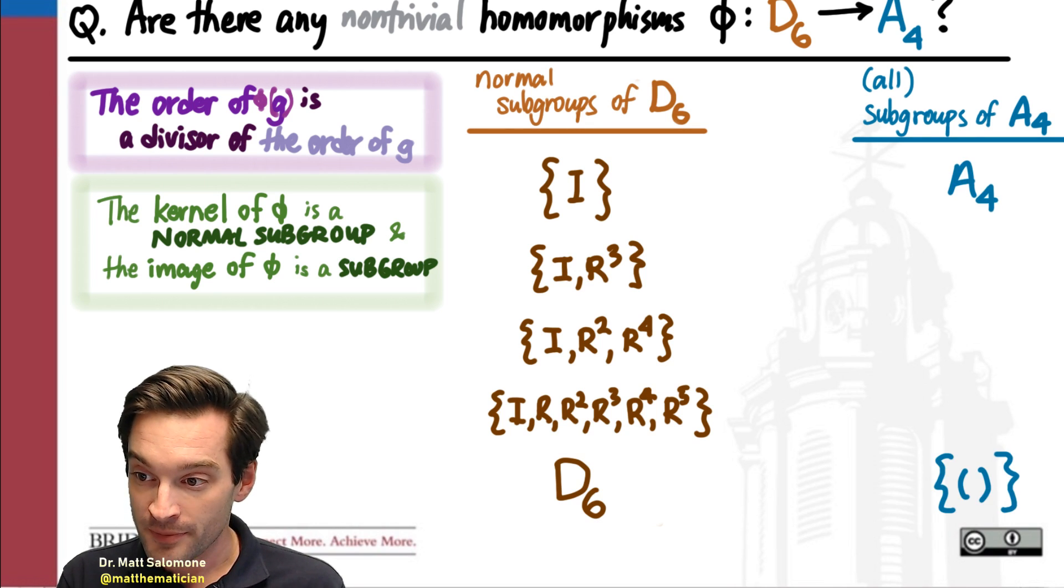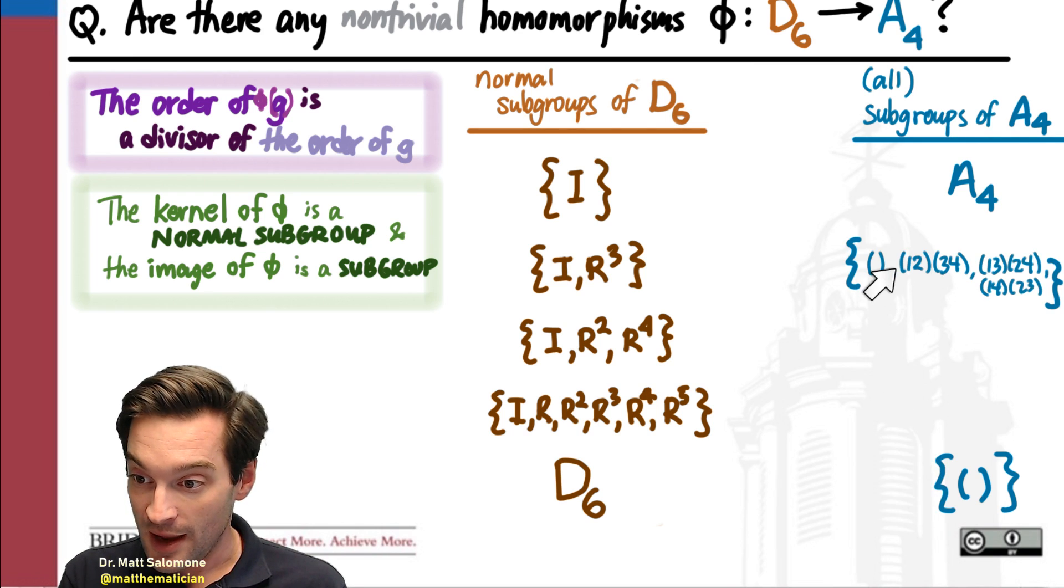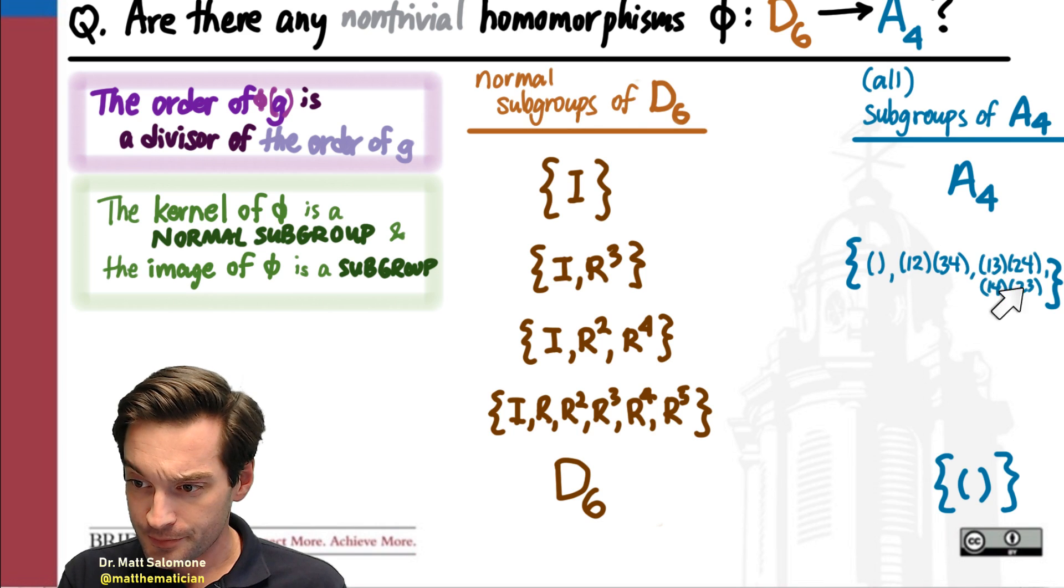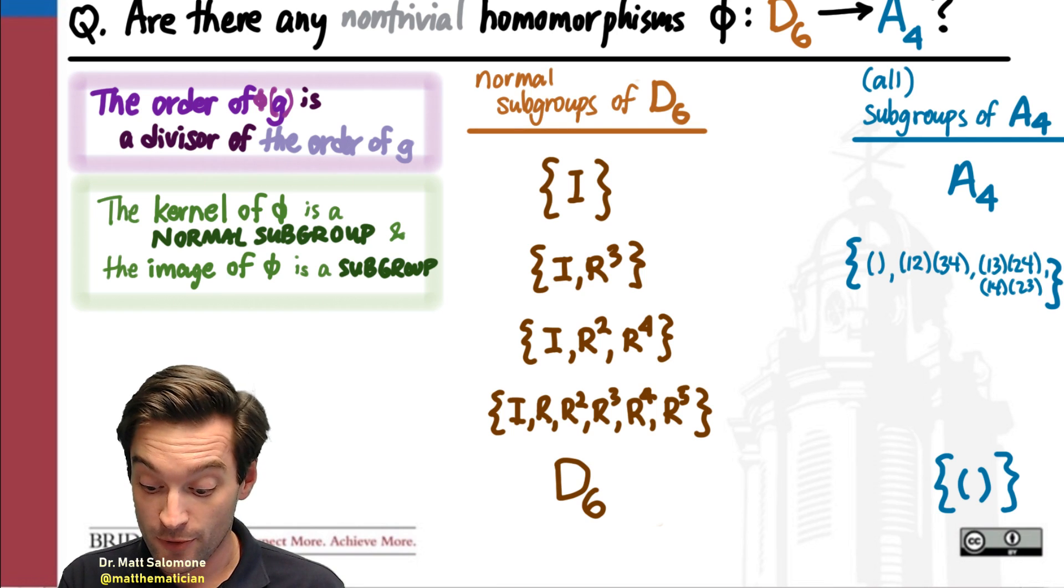On the other side, A4 has only three normal subgroups. Itself, the trivial subgroup, and then also the Klein 4 subgroup. So the trivial and then the three elements of order two together form a normal subgroup.